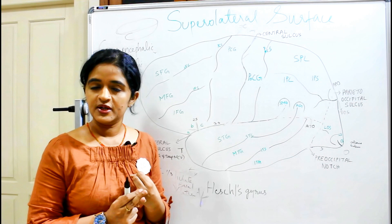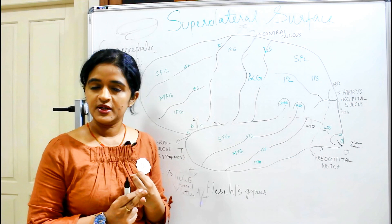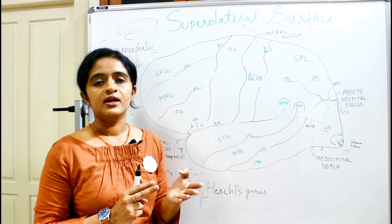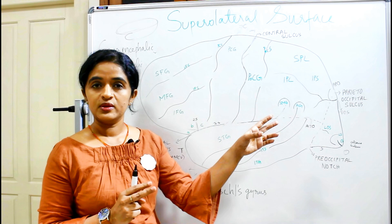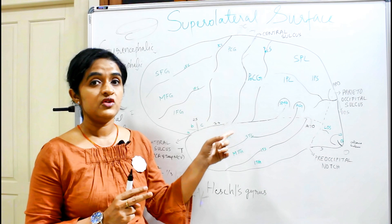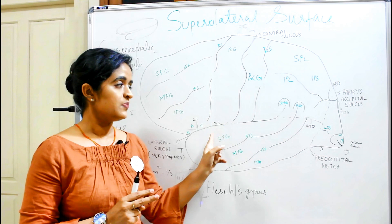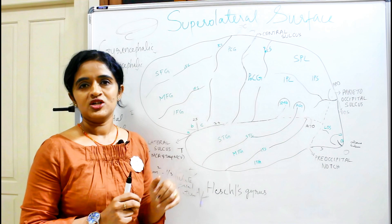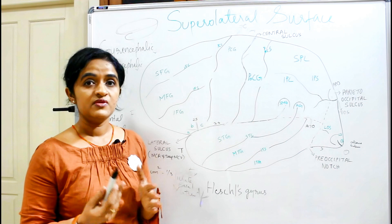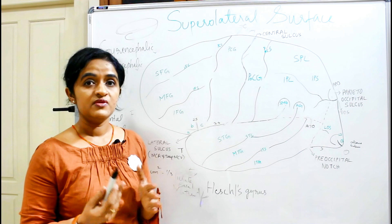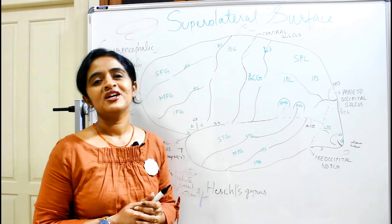In this session, we discussed the different surfaces, borders, and poles of the cerebral hemisphere. We covered the four important sulci: the central sulcus of Rolando, the lateral sulcus of Sylvius, the parieto-occipital sulcus, and the calcarine sulcus. Using the central and lateral sulci, we divided the superolateral surface into four lobes. In the next session, we will discuss the subdivisions of the lobes and other minor sulci. Thank you for watching!